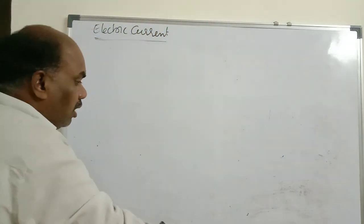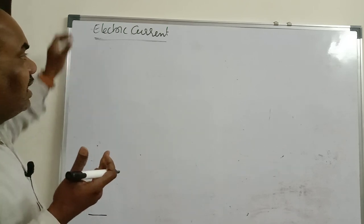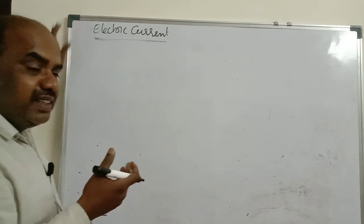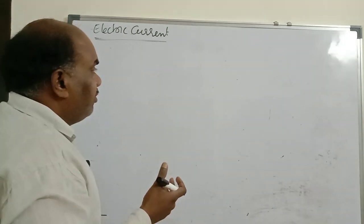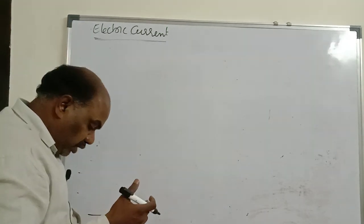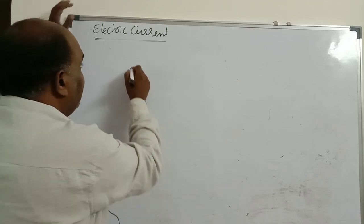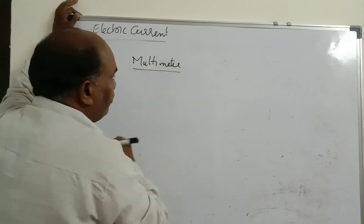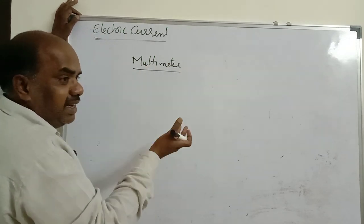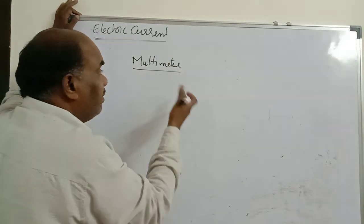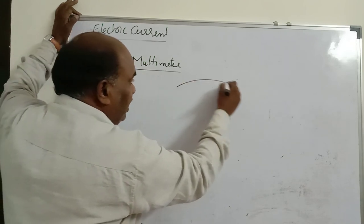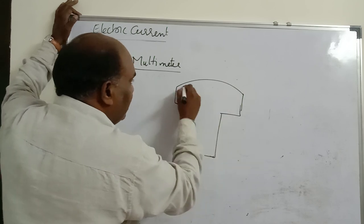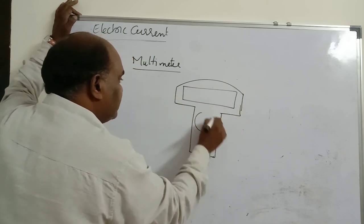Now, connecting many instruments is very difficult, so scientists developed one more instrument called a multimeter. The name itself says it all — multimeter measures multiple physical quantities. This is a multimeter. It has a display, a selection knob, and ports — these are the main parts.